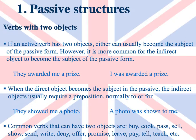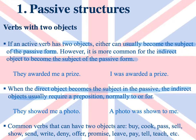Let's look at verbs with two objects. If an active verb has two objects, either can usually become the subject of the passive form. However, it is more common for the indirect object to be the subject of the passive form. When the indirect object becomes the subject in the passive, it usually requires a preposition, normally to or for. For instance: they show me a photo — a photo was shown to me. Common verbs that can have two objects are: buy, cook, pass, sell, show, send, write, deny, offer, promise, leave, pay, tell, teach.